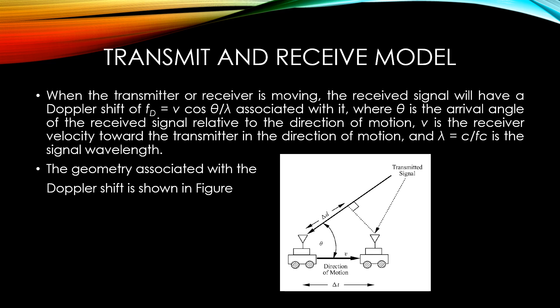For an example, when the transmitter or receiver is moving, the received signal will have a Doppler shift of ft equal to V cos θ upon λ associated with it. Where θ is the arrival angle of the received signal relative to the direction of motion, V is the receiver velocity towards the transmitter in the direction of motion, and λ equal to c by fc is the signal wavelength, where c is the speed of light. The geometry associated with the Doppler shift is shown in the figure.